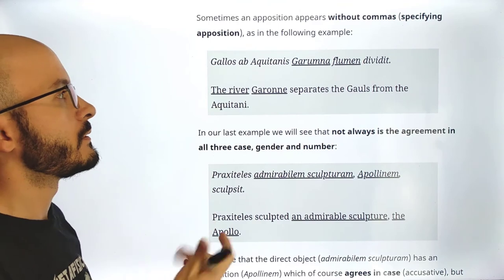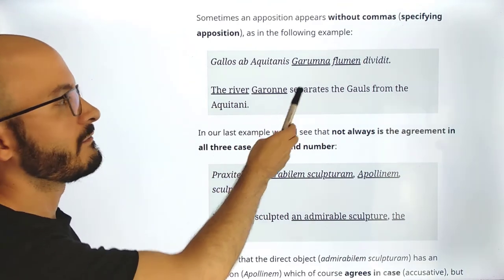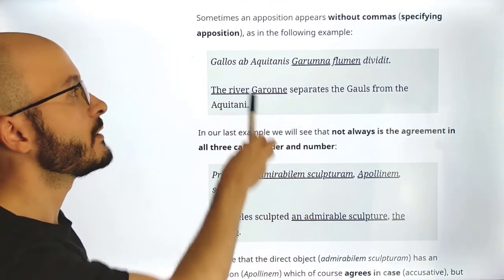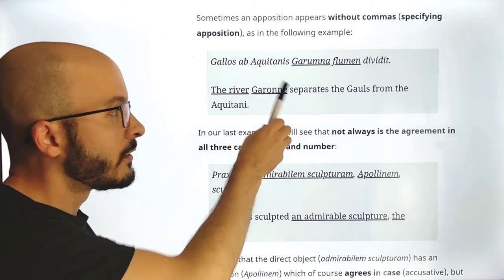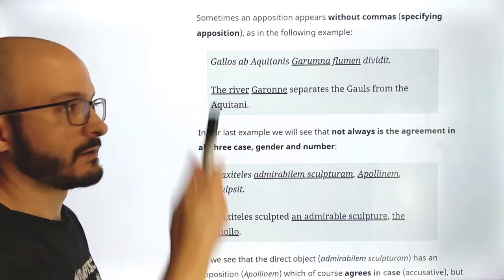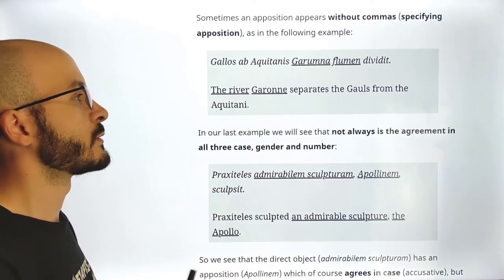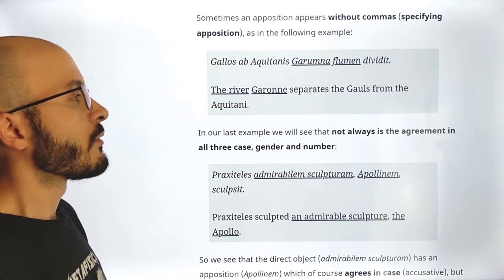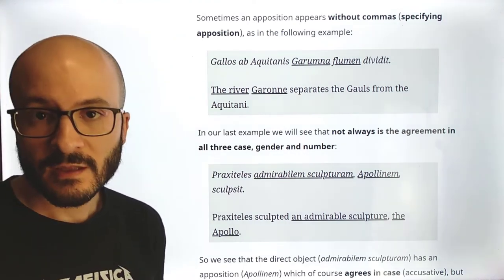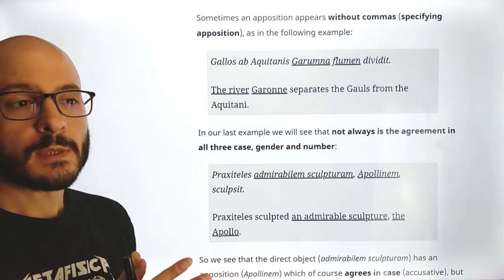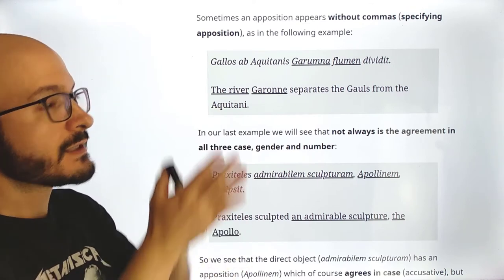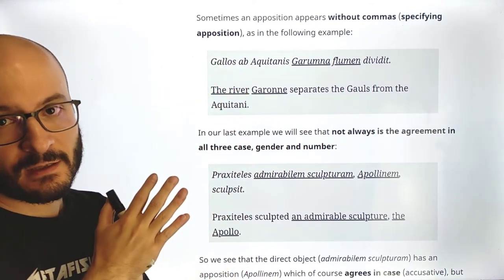In English it works exactly the same way: 'the river Garonne separates the Gauls from the Aquitani.' So there we see the difference between explanatory apposition and specifying apposition.